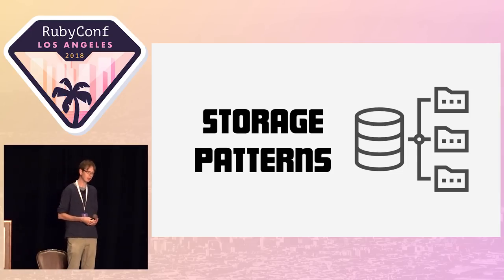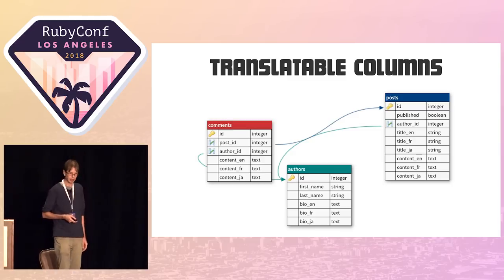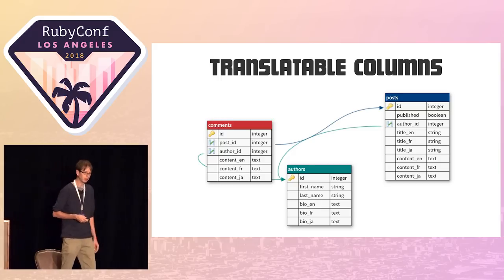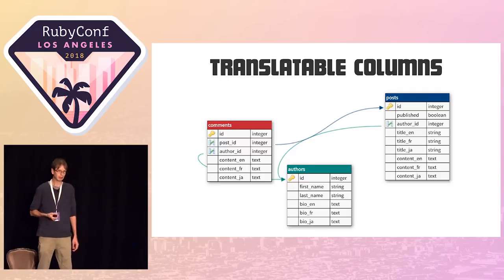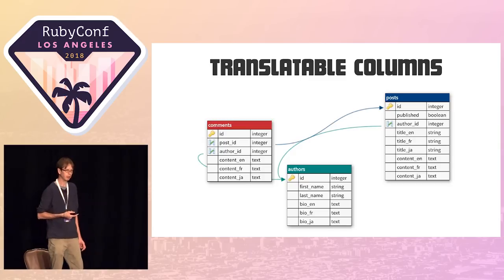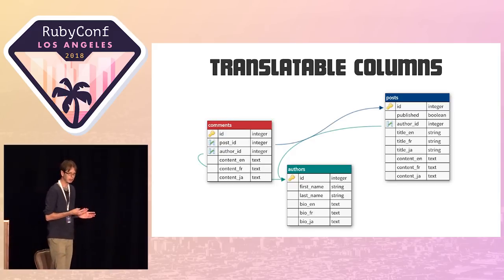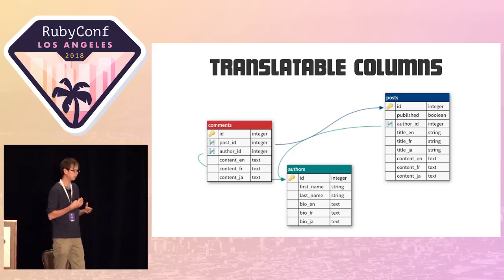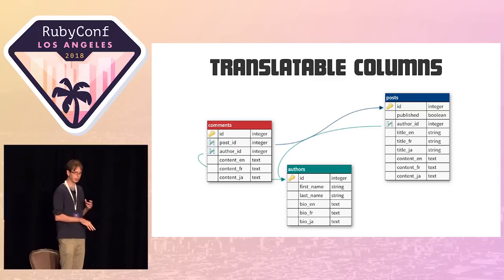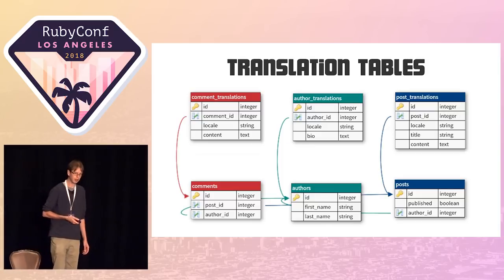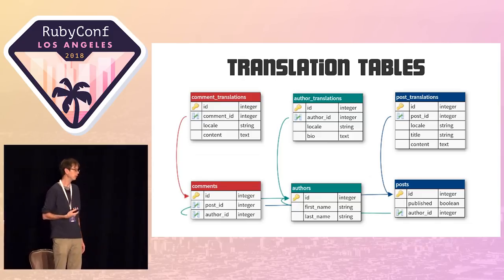There are a number of different patterns to store translations. The most basic is translatable columns. If you imagine a comment model with a comments table — your ORM won't know about a `content` method because there's no content column. What you do is create columns for every language you want to translate into: `content_en`, `content_fr`, `content_ja` for English, French, Japanese. Then you dynamically define a method mapping from `content` to the right column depending on the current language. It's straightforward and pretty transparent, but you have to migrate for every new attribute, language, or model.